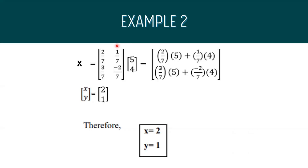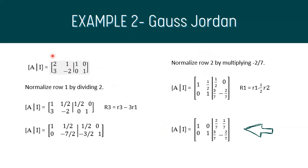Recalling the equation form AX equals B, and after multiplying both sides by the inverse of A, we get X equals the inverse of A multiplied by B. Substituting: (2/7)(5) plus (1/7)(4) and (3/7)(5) plus (negative 2/7)(4). We get x equals 2 and y equals 1. Solving the same example using Gauss-Jordan yields the same A inverse: [2/7, 1/7; 3/7, negative 2/7], confirming consistency between both methods.